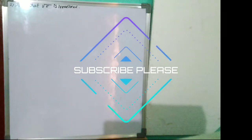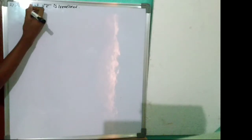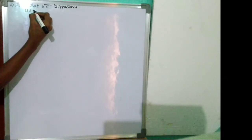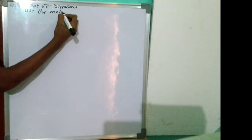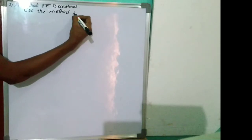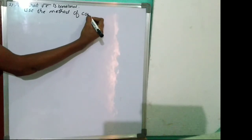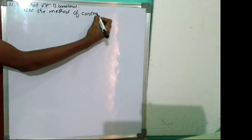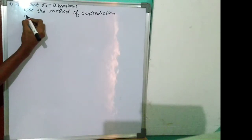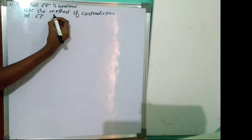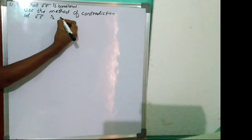In this video we have to prove that root 5 is irrational. We use the method of contradiction. Let root 5 be a rational number.